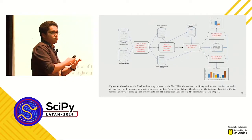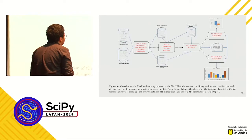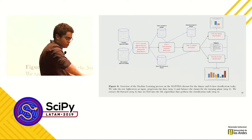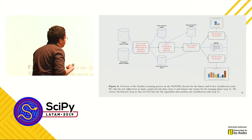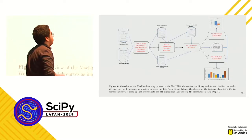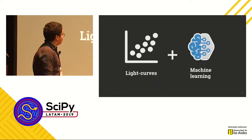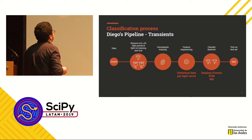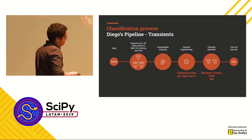Once we had the database, we could start constructing a machine learning pipeline. With the two datasets constructed, we discarded light curves that had less than 10 data points because the feature-extraction process would have numerical problems with fewer points. Then we had to oversample the training set because the classes were extremely unbalanced. Then we extracted the features and applied our classifiers. The general pipeline involves oversampling, extracting features, classifying, and then evaluating the performance of each classifier to choose the best one.